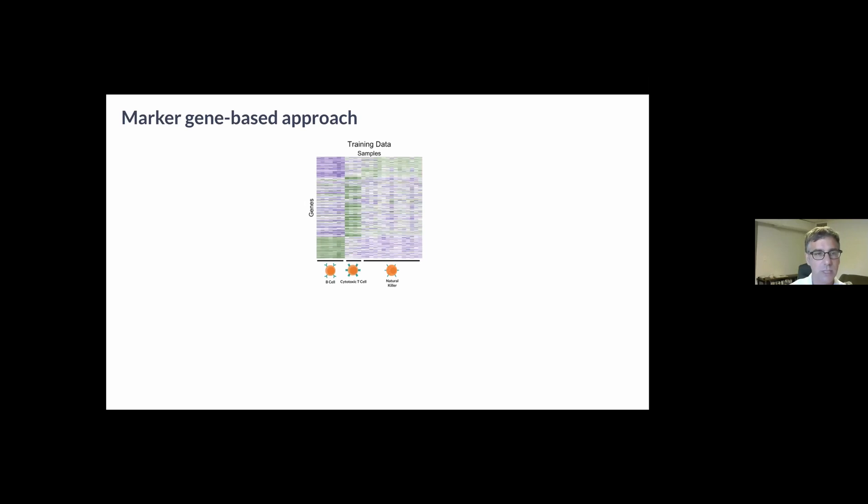The second major class of approaches are marker gene-based approaches. These also begin with expression profiles of purified cell types, and throughout this I'll be using MCP-counter as an exemplar of this class. As before, I'm showing several samples of purified B cells, CD8 T cells, and NK cells.